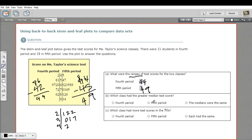All right, let's look at B. Which class had the greater median test score? So the median is the value that's right in the middle. So we want to count the number here and then see if we can find the middle one. Let's do that for fourth period first. It's easier, there are fewer scores.